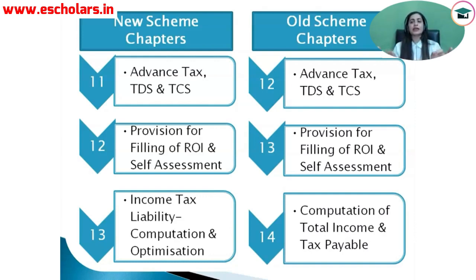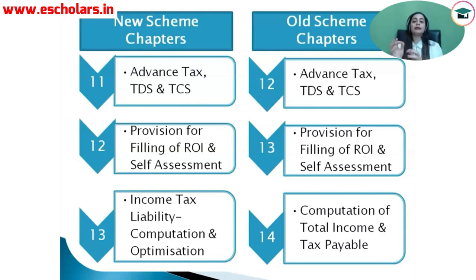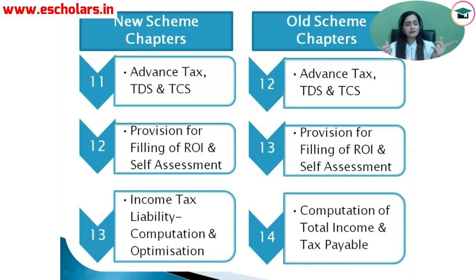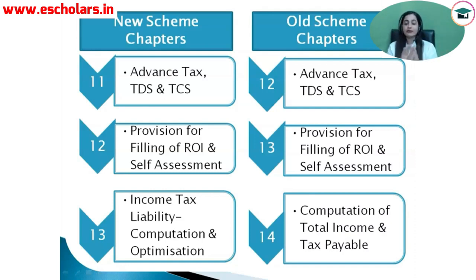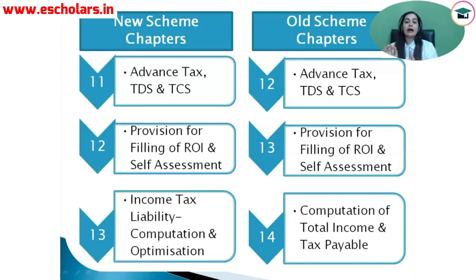The most important change in old versus new scheme is that the exemption chapter has been deleted, and its most important part has been merged into the deduction chapter. There is no other significant change in the sections — the new scheme has slightly different naming but the content covered in the chapters is essentially the same. It is basically computation of total income and income tax liability. Now let's look at the most important change, which is the marks allocation.